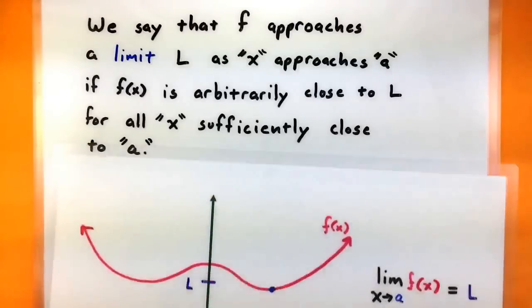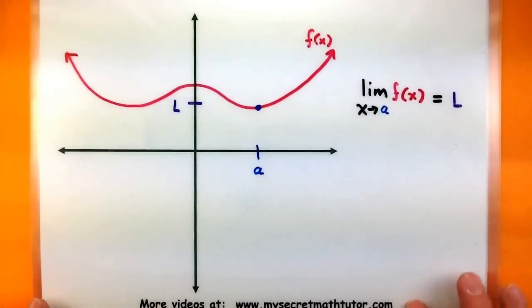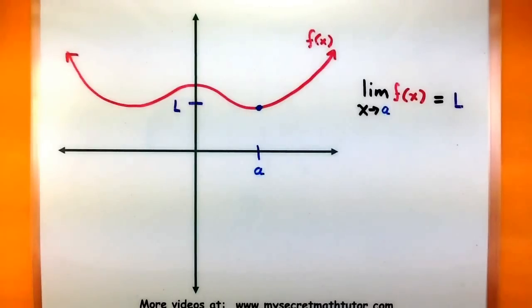To look at this definition more pictorially, let's look at a graph. So essentially my graph is f of x, and I'm really curious about the behavior of f around some point called A.